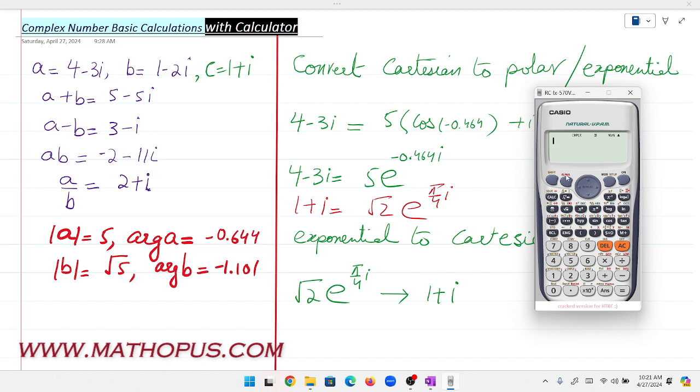First, let's add two complex numbers. Press Alpha A, plus, Alpha B.